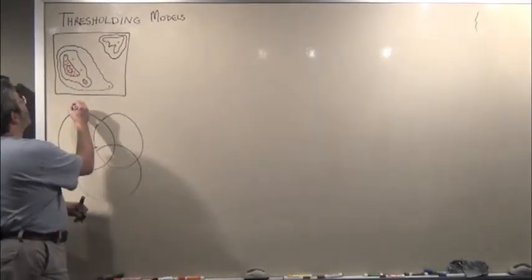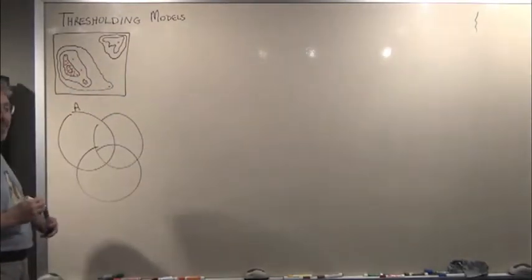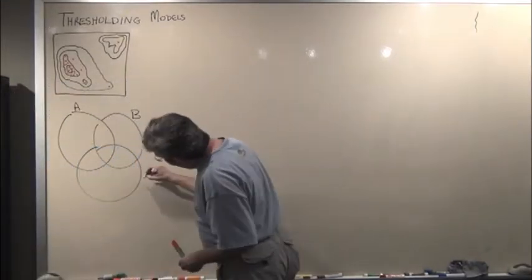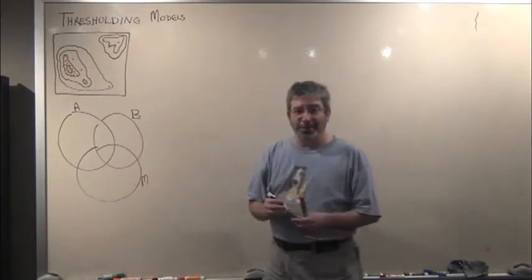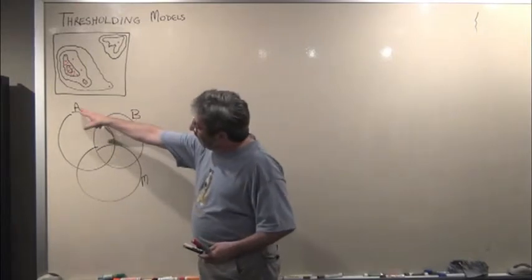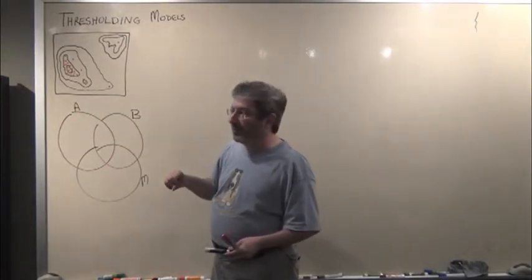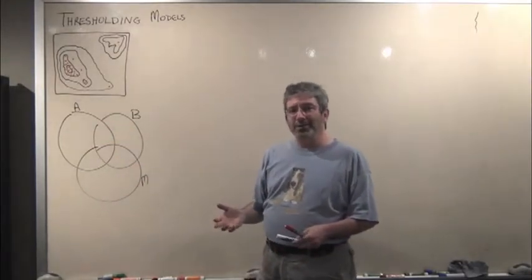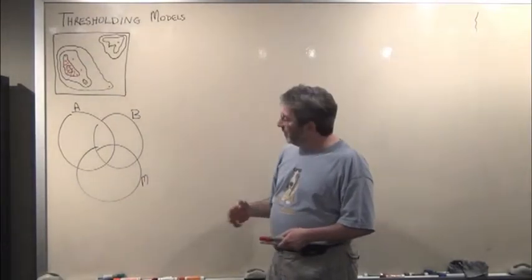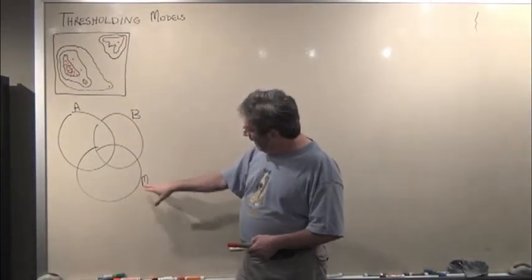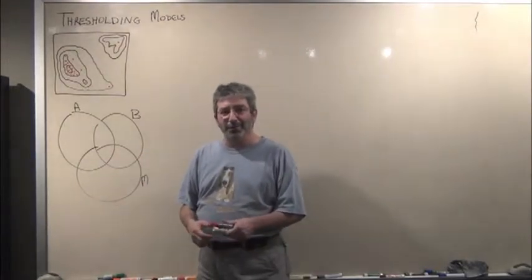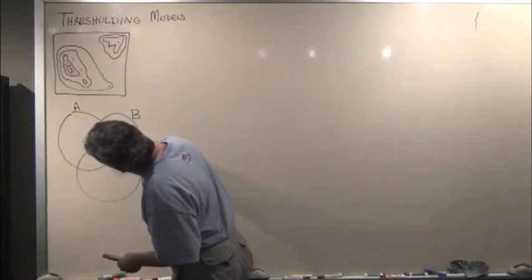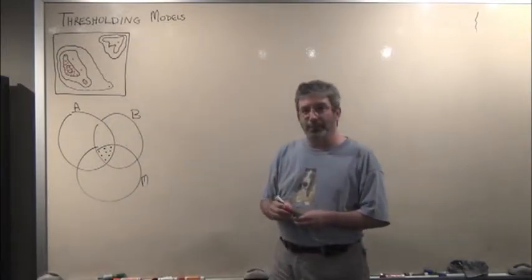In the BAM diagram we imagine each species as having abiotic requirements, biotic requirements, and some area of mobility. These are the areas where the abiotic conditions are correct for the species. These are the areas where any interactions with other species that are required for persistence are fulfilled. And M is the area that is accessible to the species. We should be seeing occurrences of our species only in this area.